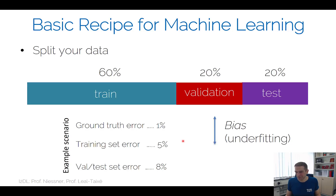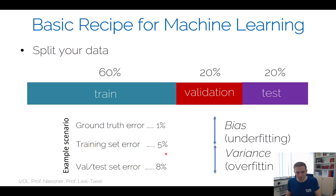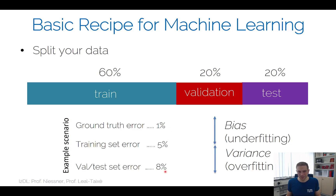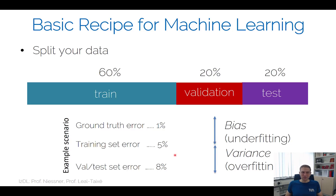But then when going from training to validation and test error, you have the generalization gap — that's the overfitting issue. If the model memorizes the whole training set, you'll probably have very high validation error. The validation error will be higher than training error because it's data the model hasn't seen, though from a similar distribution. There will always be some generalization gap.